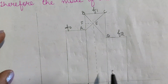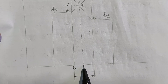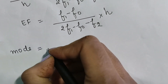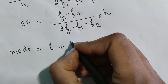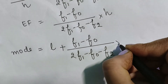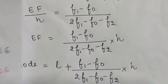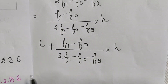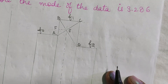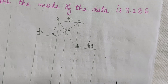Since the mode equals l plus EF, where l is the lower limit of the modal class, we get: Mode = l + [(f1 − f0) / (2f1 − f0 − f2)] × h. This is how we derive the formula for mode. I hope this video was helpful — please like, share, and subscribe. I'll soon come with the next video. Till then, keep learning. Happy learning. Thank you, bye-bye!